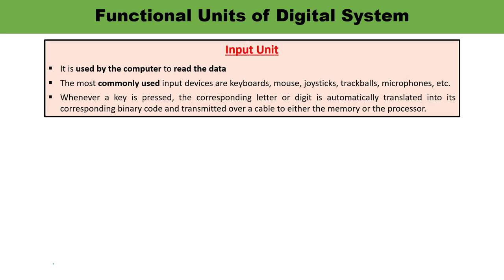Let's begin with the input unit. Input unit is always required because there is a requirement to input data. For example, a keyboard — whatever you are typing, any number or digit, the command or data is provided to the computer. It is converted into binary because the computer deals with binary language. Input devices take input and convert it into binary so the computer can understand and perform the function. Commonly used input devices are keyboards, mouse, joystick, drag balls, and microphones.